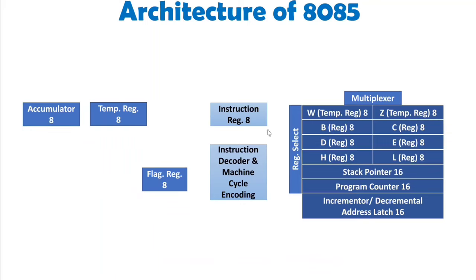These are referred to as general purpose registers because the programmer can use these seven registers for programming. They are 8-bit registers in size. After that we have the stack pointer, which indicates the top of the stack and is 16 bits in size. After that we have the program counter, which is also 16 bits. It indicates where the next instruction is located in memory — the next instruction's location is addressed by the program counter.